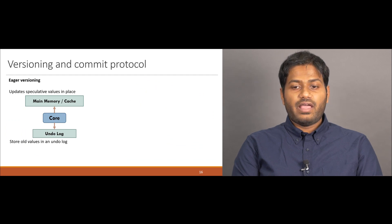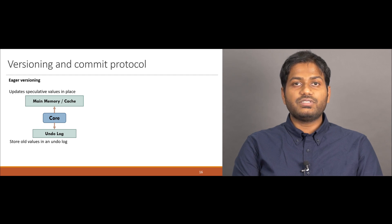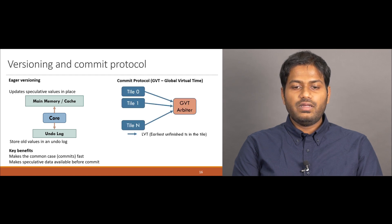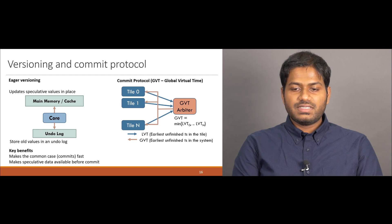Kronos relies on two mechanisms outlined in prior work for its versioning and commit protocols. Kronos uses eager versioning, which updates speculative values in place, but stores the old values in a separate on-chip undo log. This scheme makes commit fast and allows tasks to use speculatively produced data before the producer commits. Kronos uses a GVT protocol to find which tasks can commit. In this protocol, each tile communicates the timestamp of its earliest unfinished task to a global arbiter, which responds with the global virtual time. Each Kronos tile walks its commit queue in the background and commits tasks with a lower timestamp than the GVT. This scheme is chosen because it achieves fast and parallel commits.